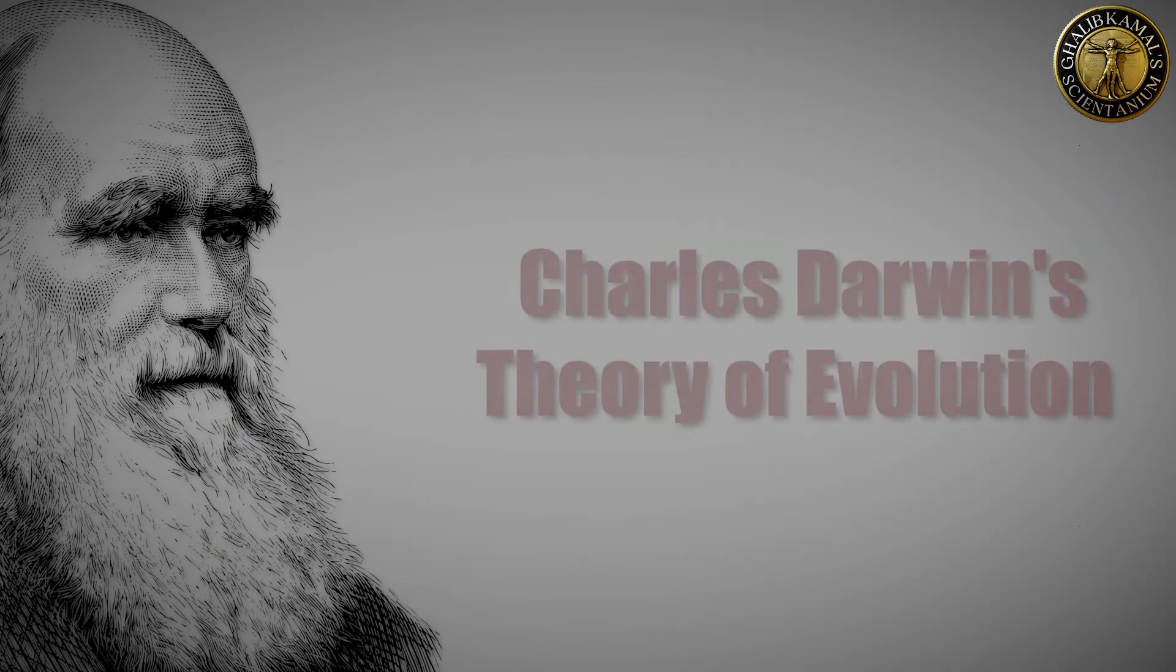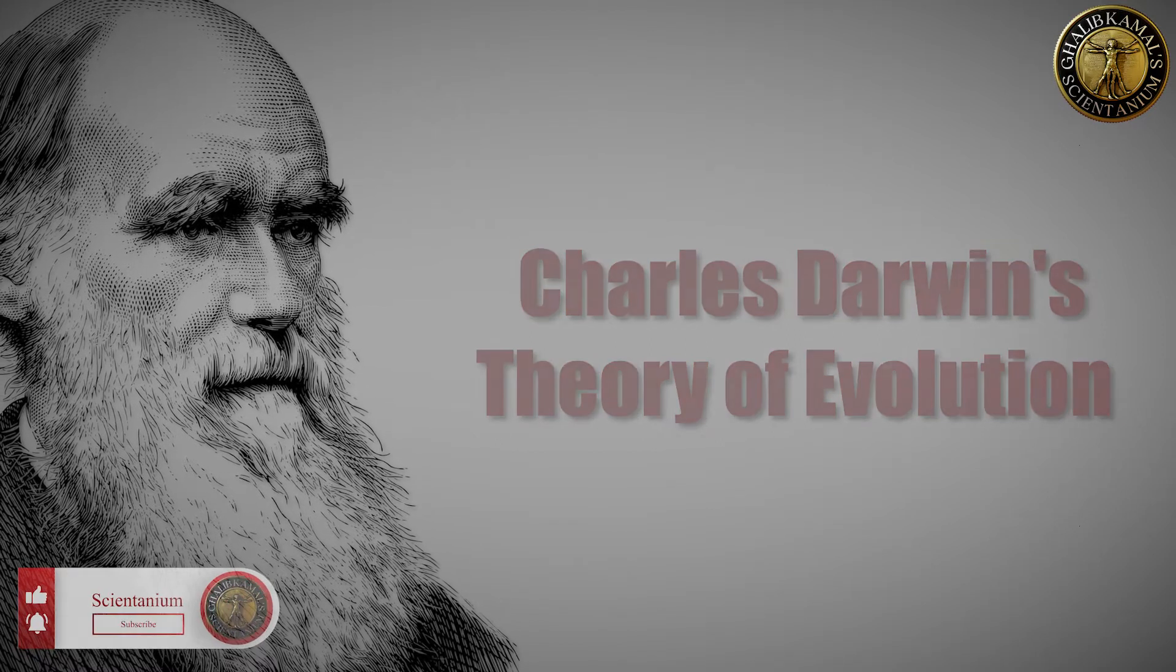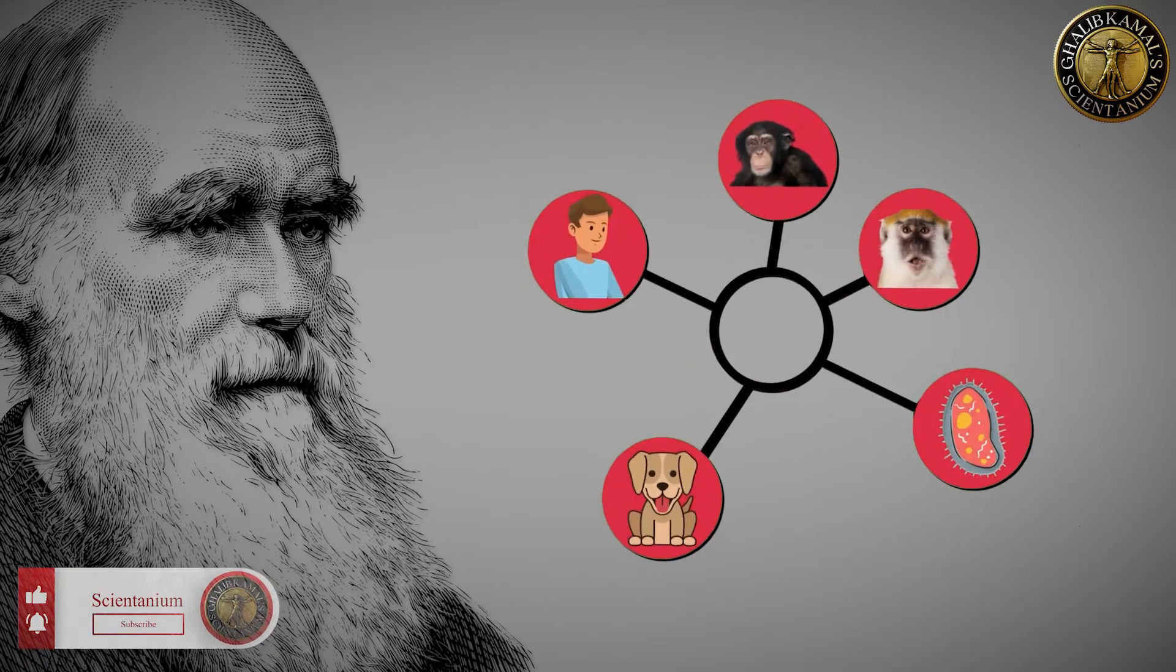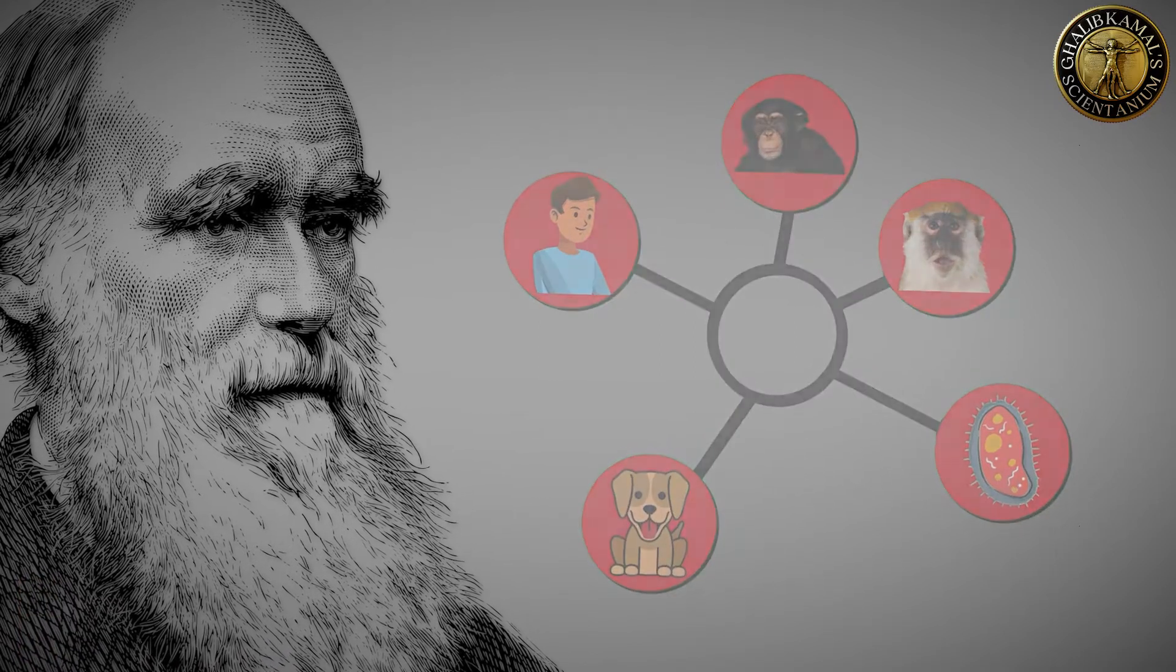The fundamental prediction of Charles Darwin's theory of evolution was that all life on our planet shares a common evolutionary past. But Darwin did not know the mechanism behind evolution.